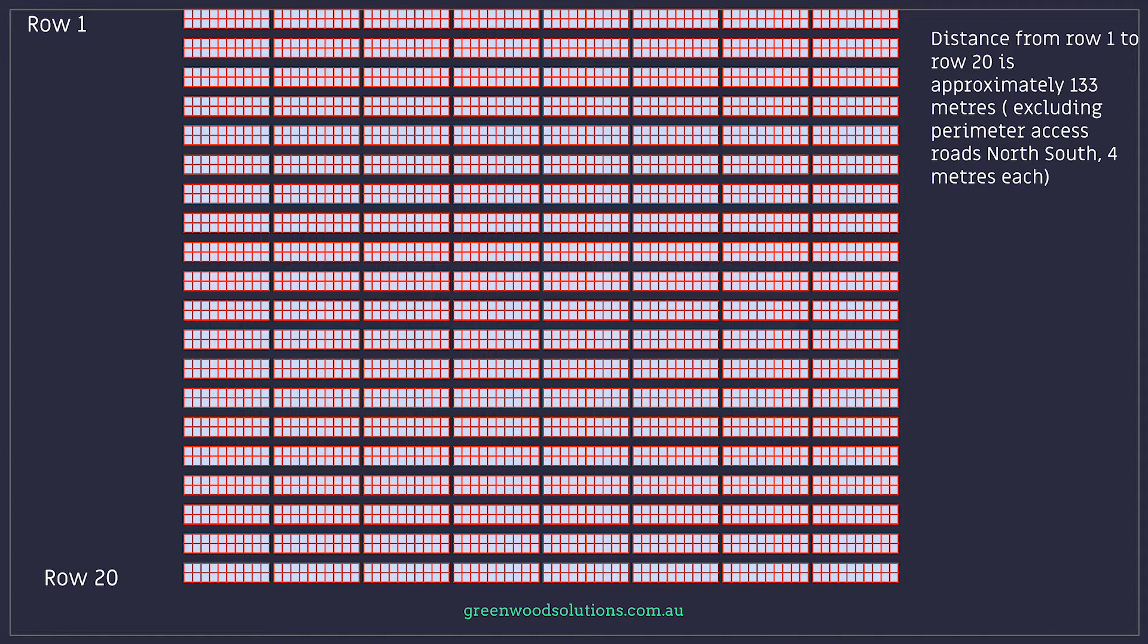The distance from row 1 to row 20 is approximately 133 meters and this is excluding the perimeter access roads because we don't have to take them into consideration for this cabling exercise.